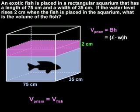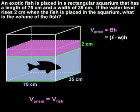We know that the height of the purple prism is represented by the rise in water level, which is 2 centimeters. Notice that the length and width of the purple prism are the same as the length and width of the base of the aquarium: 75 centimeters and 35 centimeters.